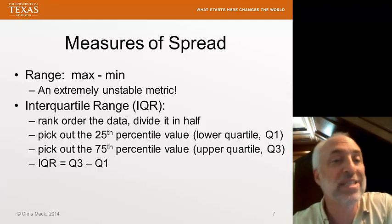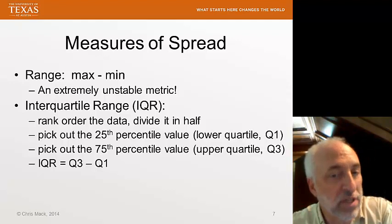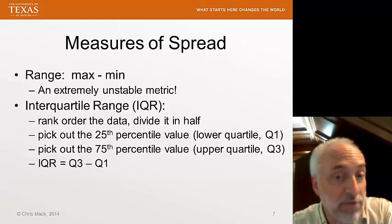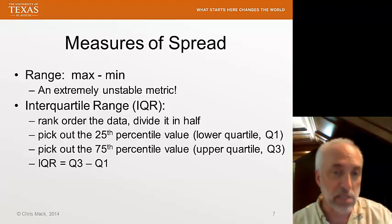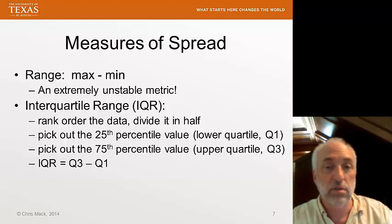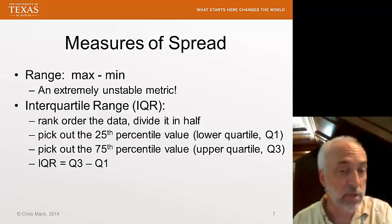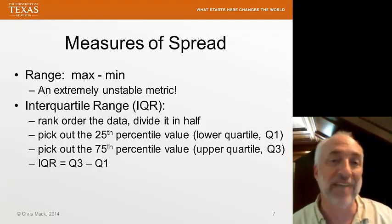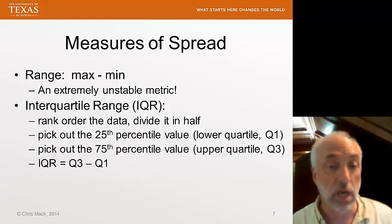A much more stable measure is the interquartile range. Here we're going to calculate the 25th percentile and the 75th percentile of the data. Now an easy way to think of doing this is to take your data and split it in half. If you have an even number of data points, it's easy. Just divide the data in half after you rank order it. Then in the bottom half, you find the median. That becomes your 25th percentile. In the upper half, you find the median, and that becomes the 75th percentile. Now if you happen to have an odd number of data points, you simply take the middle data point and include it in both halves, and then go on.